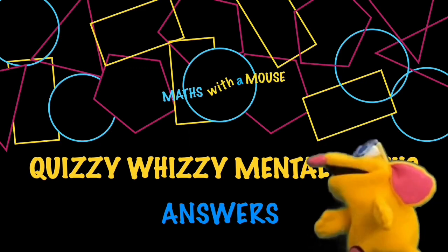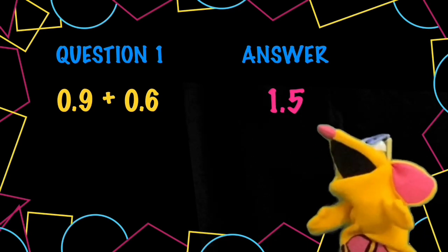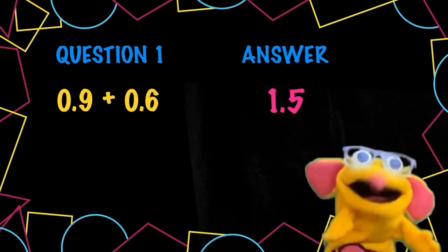Question one, please. I need a nap. 0.9 plus 0.6 is 1.5. 9 tenths plus 6 tenths is 15 tenths. That works, yes, I understand.